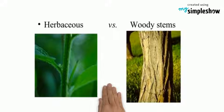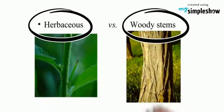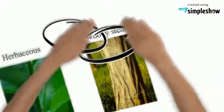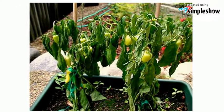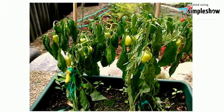There are two kinds of stems, herbaceous stems and woody stems. Plants with herbaceous stems are supported by water in the stem. When there is little water in the plant, the plant bends towards the ground.